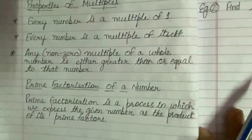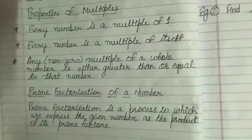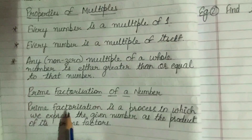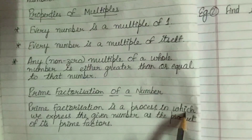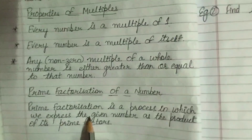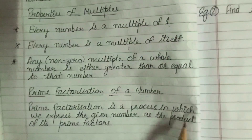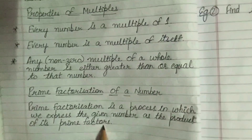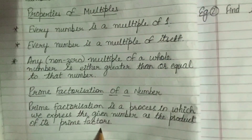Next is prime factorization of a number. It is a process in which we express the given number as the product of its prime factors. Hopefully, it is clear to you.